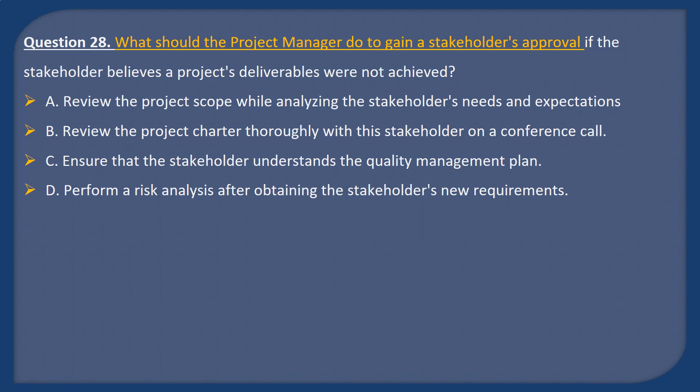Question 28. What should the project manager do to gain a stakeholder's approval if the stakeholder believes a project's deliverables were not achieved? A: Review the project scope while analyzing the stakeholder's needs and expectations. B: Review the project charter together with the stakeholder on a conference call. C: Ensure that the stakeholder understands the quality management plan. D: Perform a risk analysis after obtaining the stakeholder's new requirements.